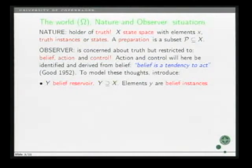The other player, observer, wants to know about the truth but is restricted to belief, but has a conscious mind and can take action which may result in control, for instance via experiments. And for the model, I'll suggest we are actually identifying action and control. Further, we recall what Good wrote some time ago, that belief is a tendency to act.